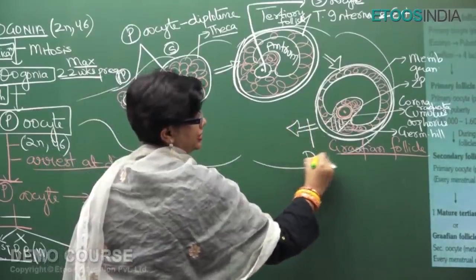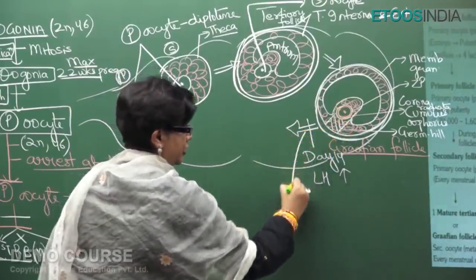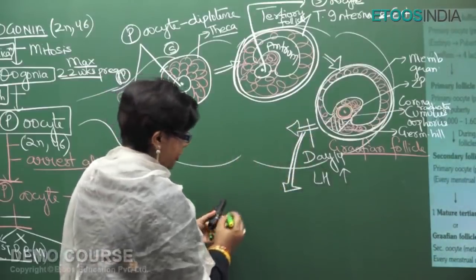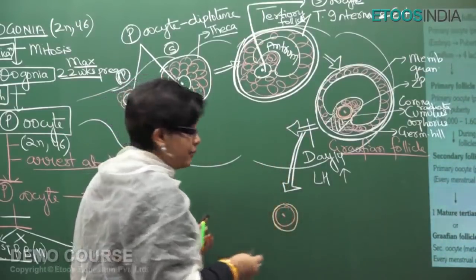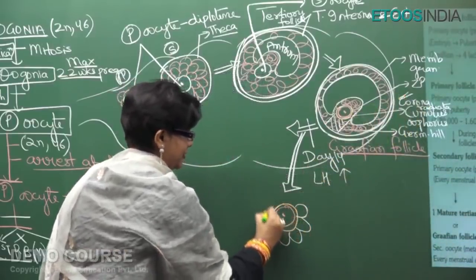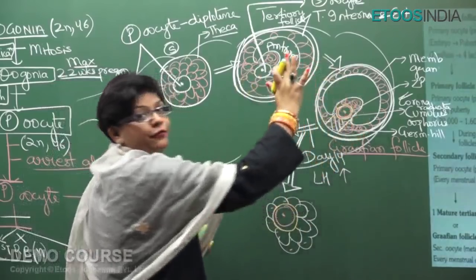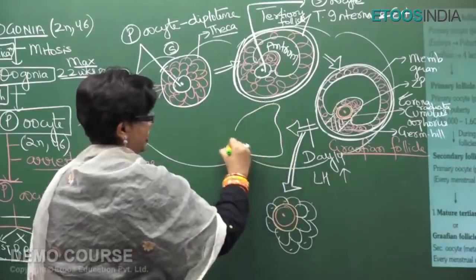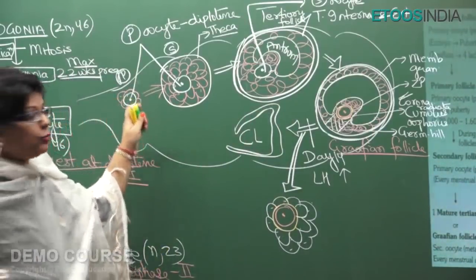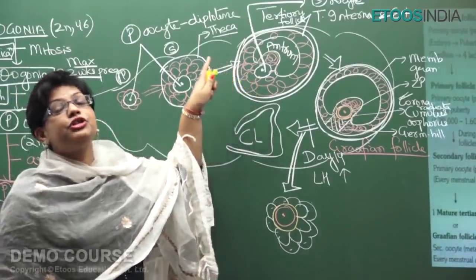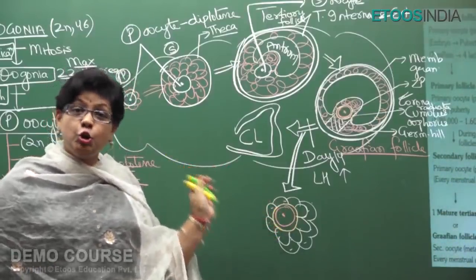On day 14 of the menstrual cycle, a sudden LH surge causes the Graafian follicle to rupture. The secondary oocyte, arrested in metaphase 2 stage along with the zona pellucida and corona radiata cells, is released into the fallopian tube. The remaining ruptured follicle is converted into the corpus luteum. The key fact is that the ovum released from the ovary is actually a secondary oocyte arrested in metaphase 2 of meiosis 2.